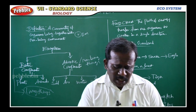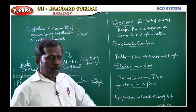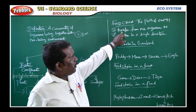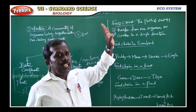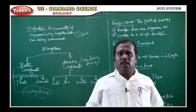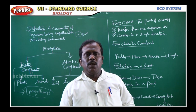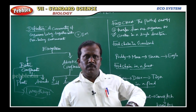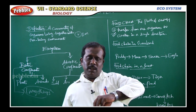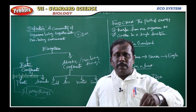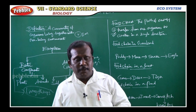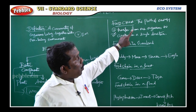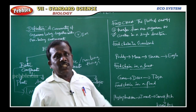Next, we will learn about food chain — this is the most important question. Define food chain: the path of energy transfer from one organism to another in a single direction. We depend on food chain; we depend on plants and animals.